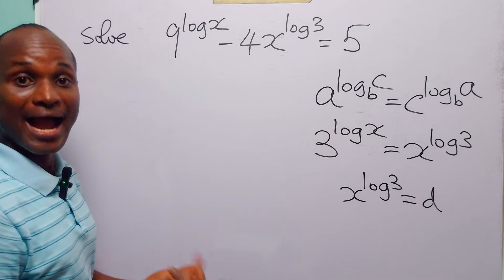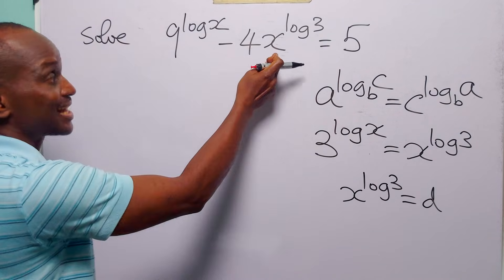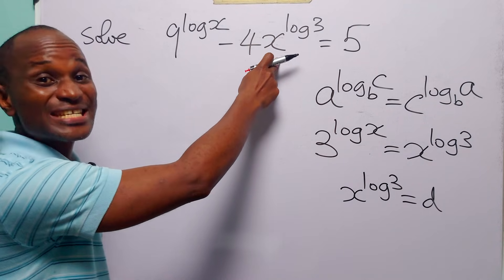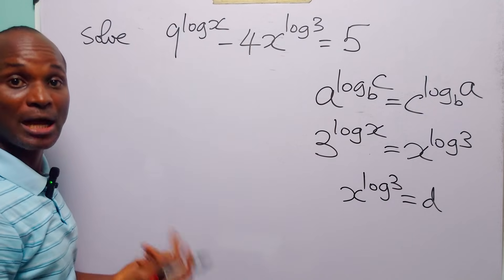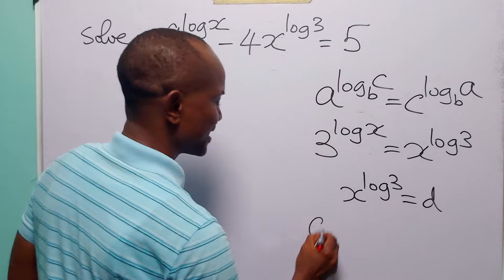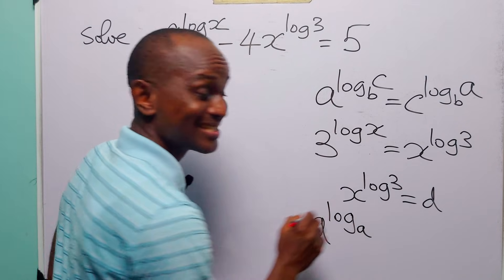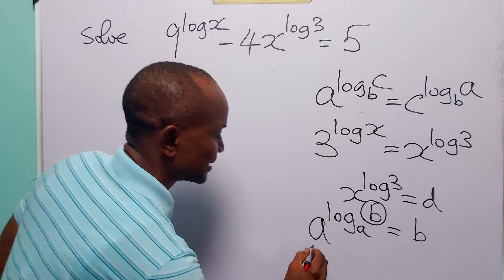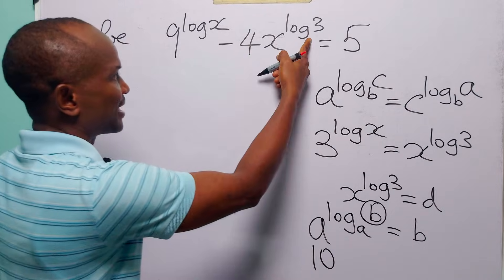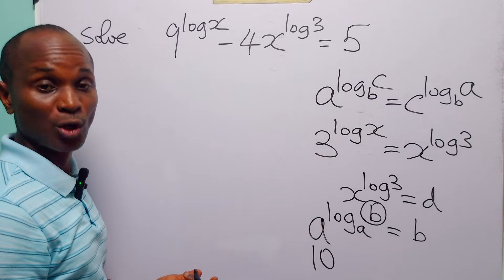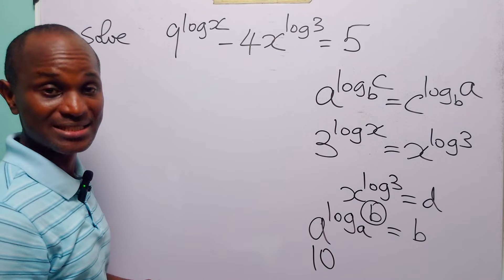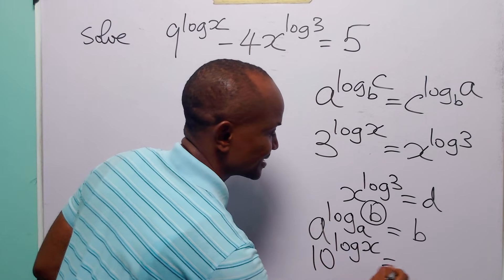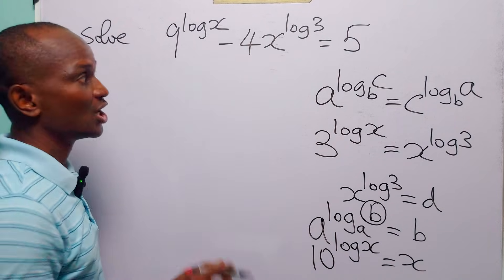In case you do not know this identity, another way of simplifying this equation is to start with the second term and try to write it to have the same exponent as the first term. Remember that a to the power log base a of b is equal to b. Since we are working in base 10 — whenever we write log without specifying the base, it means common log, base 10.